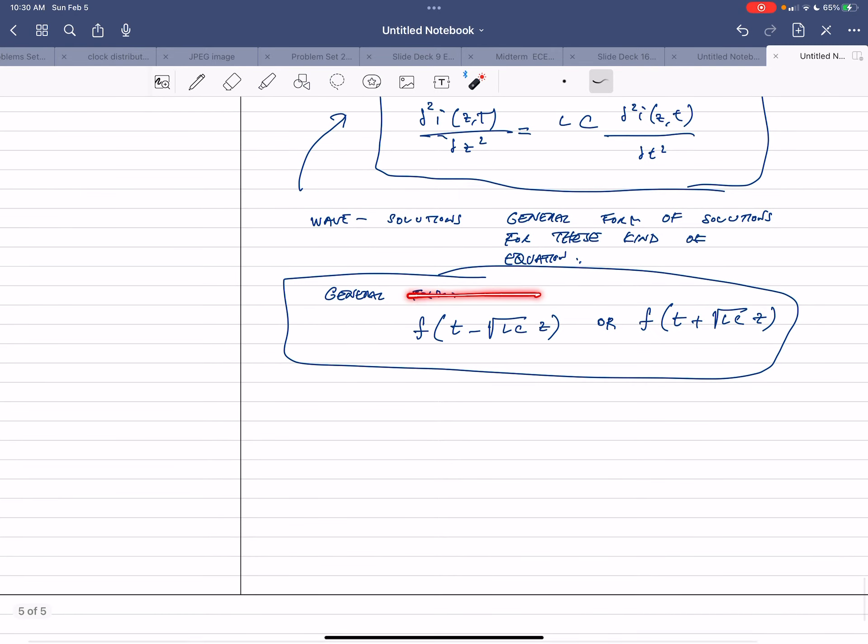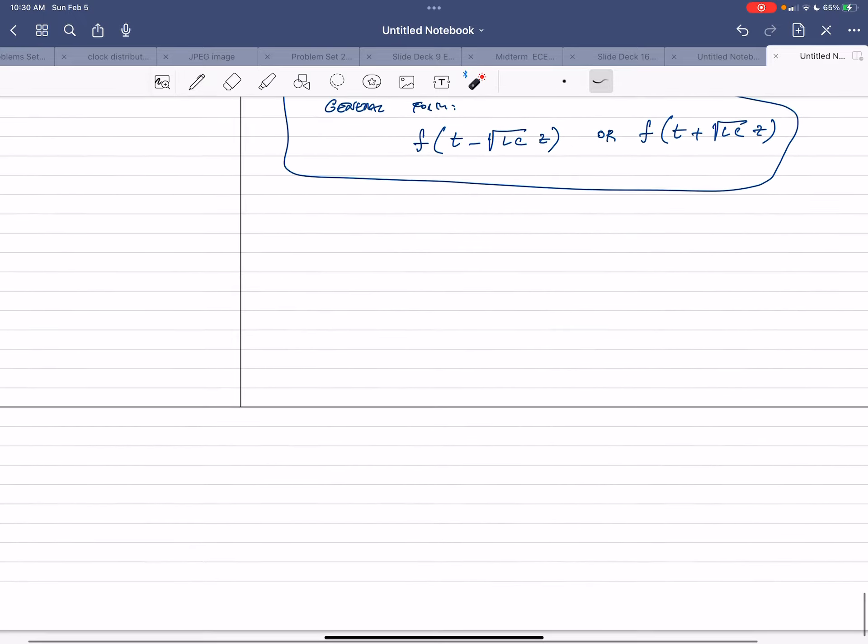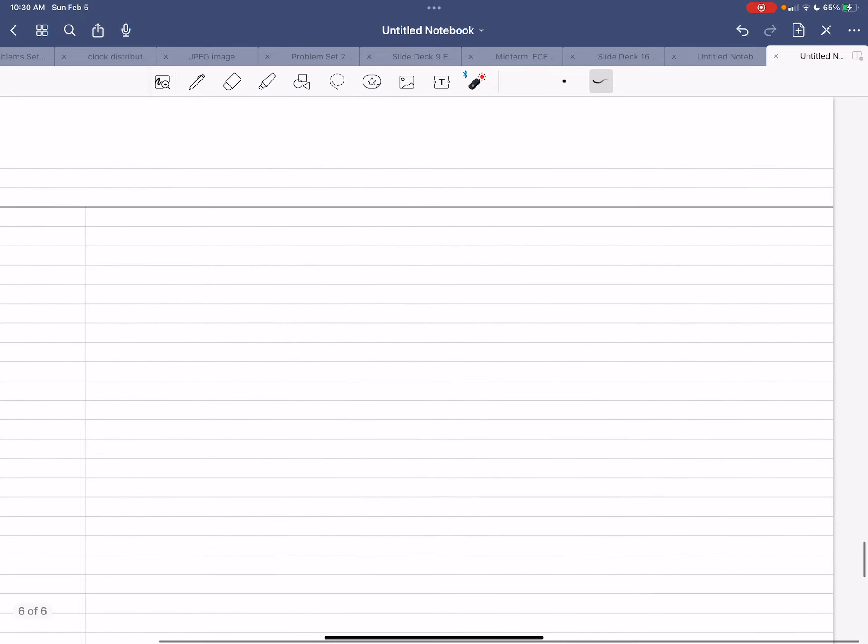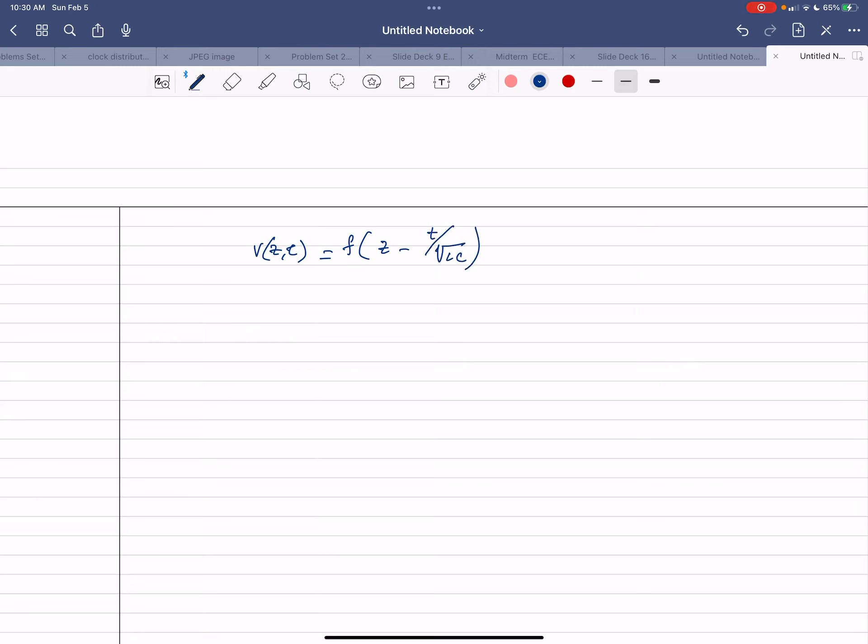So I'm going to rewrite this thing and put LC down here and look at sort of what a solution might look like. So let's say we have v of z,t is some function of z minus t over root LC. And let's say this function is something really complicated, I'm not even going to be able to write it. I'll just draw it as some kind of symmetric function like that. So that's what f looks like.